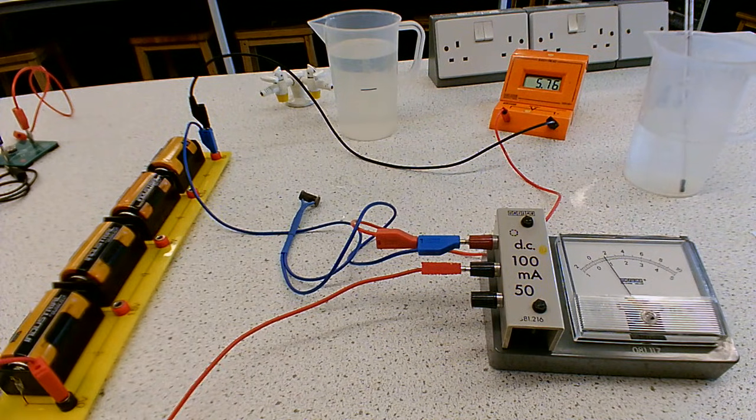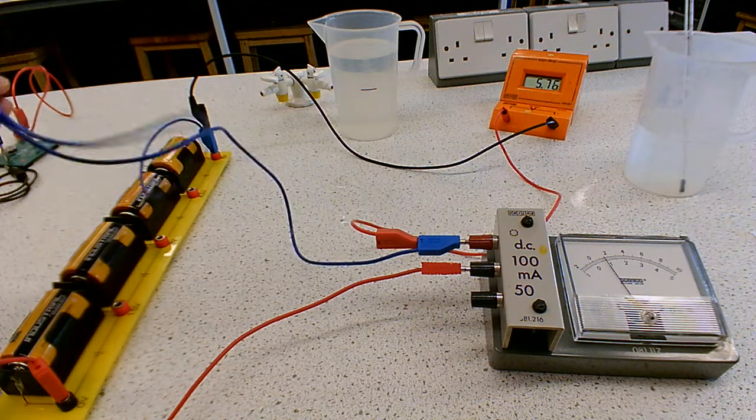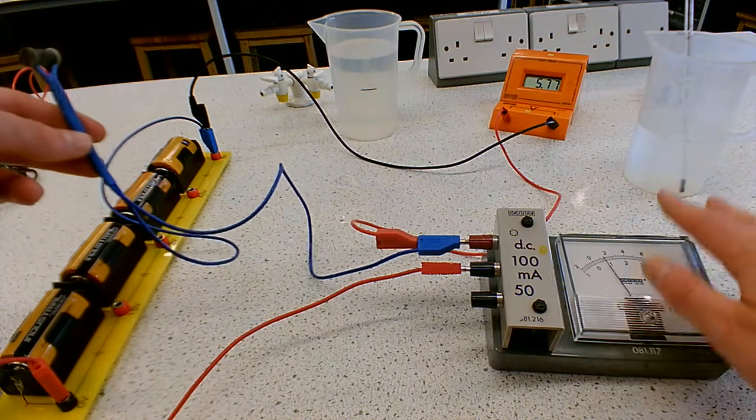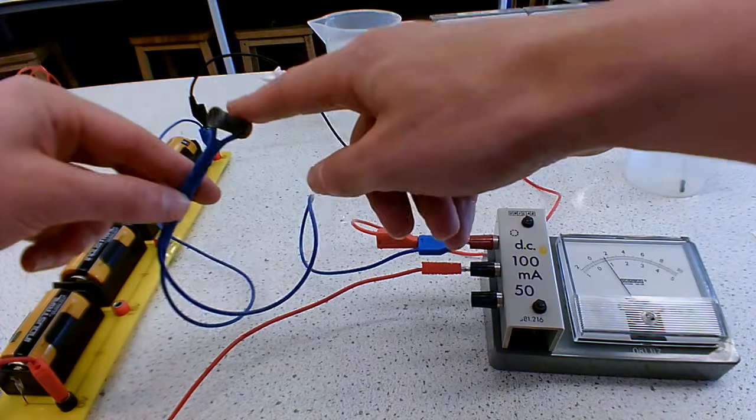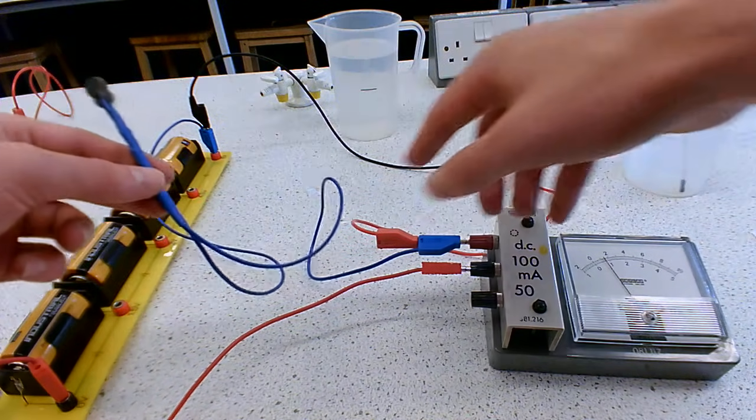The circuit we've got here is a classic measuring resistance circuit. We've got an ammeter that's in series with it, and we've got a voltmeter in parallel with it.